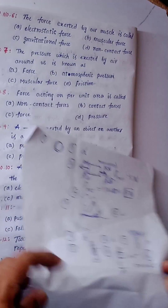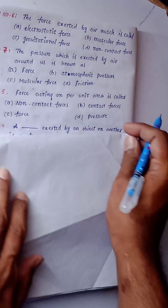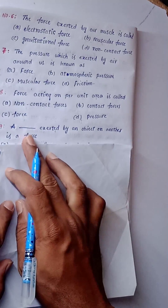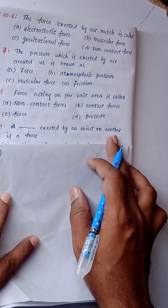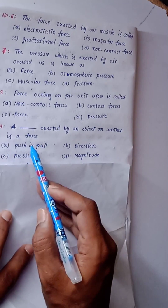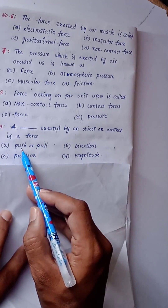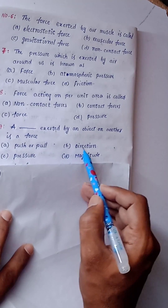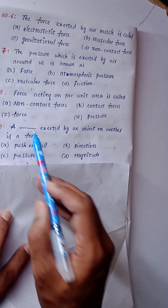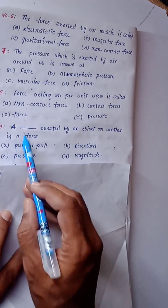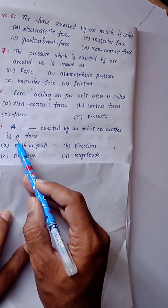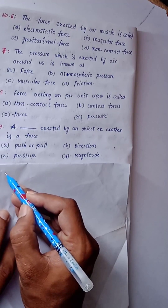Question number 9: If dash exerted by an object on another — a push or a pull exerted by an object is called a force. So option A is the right answer.